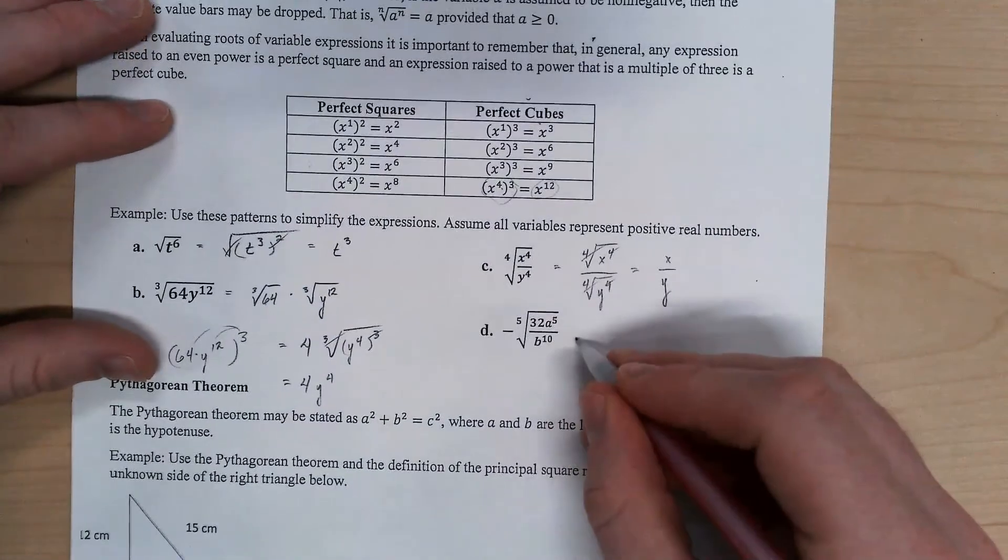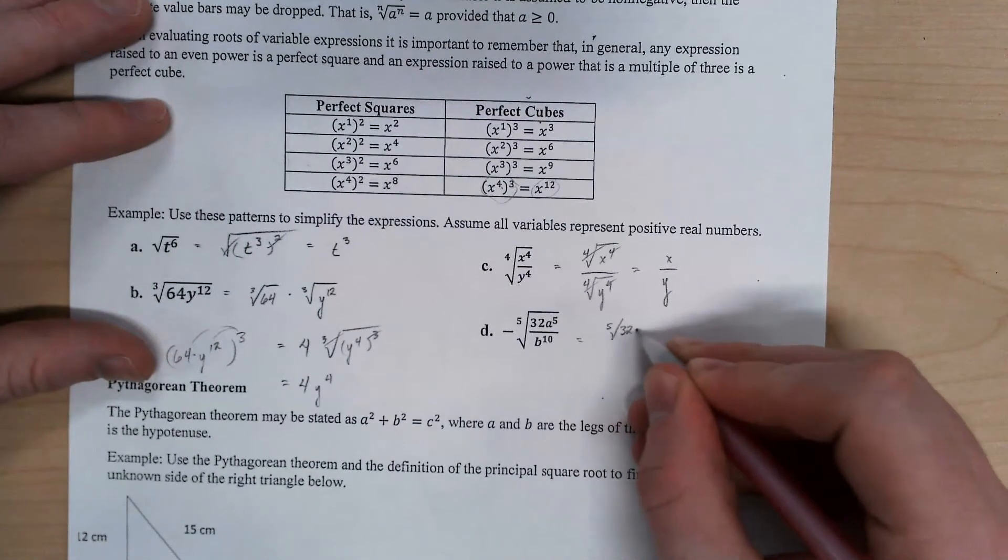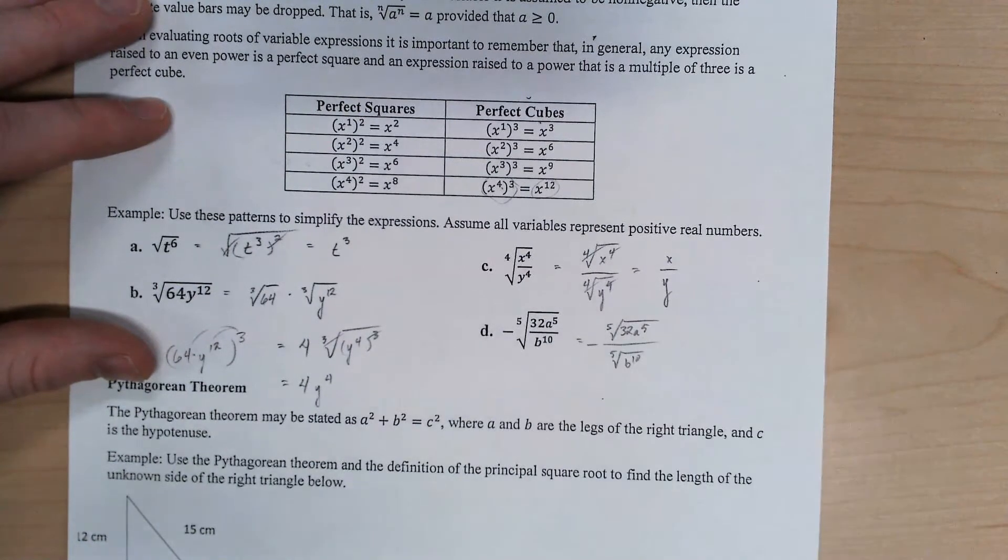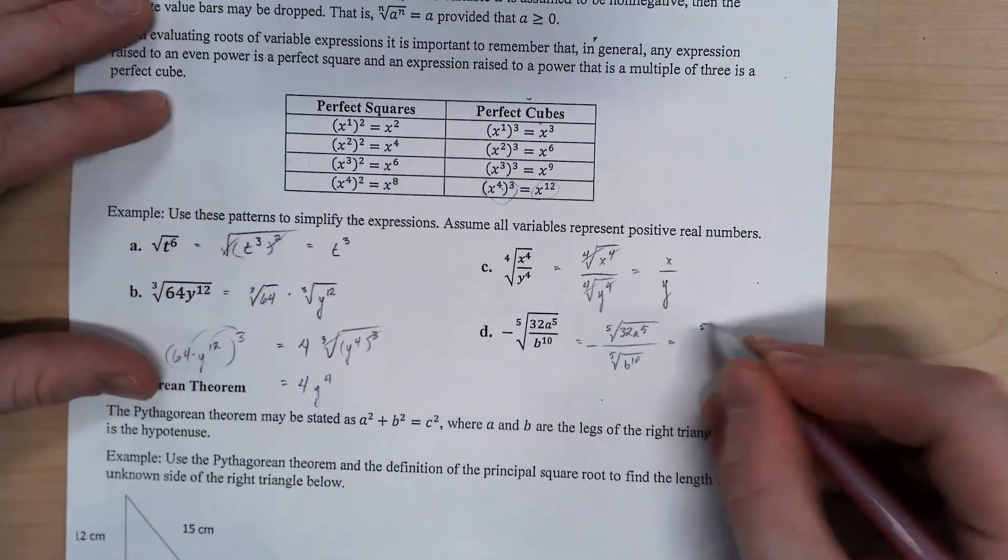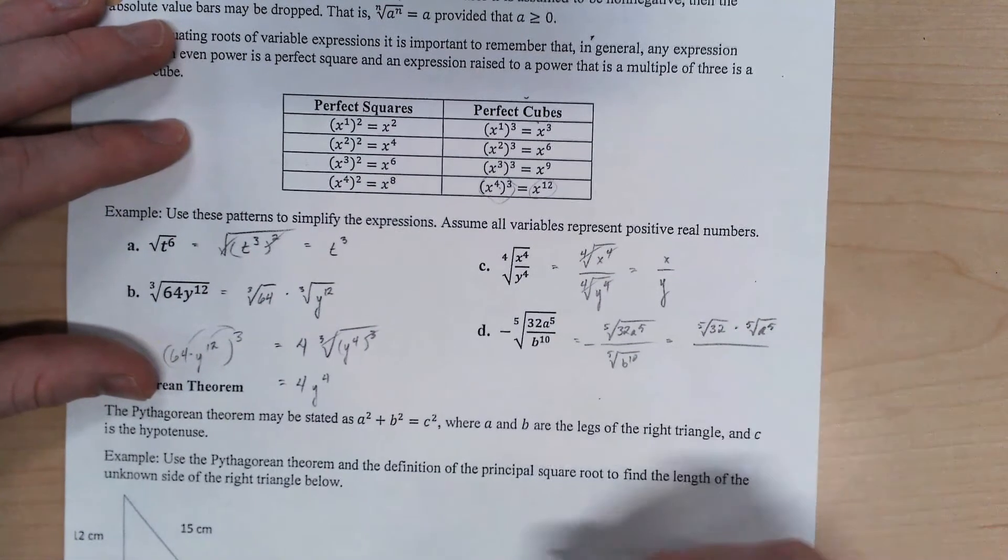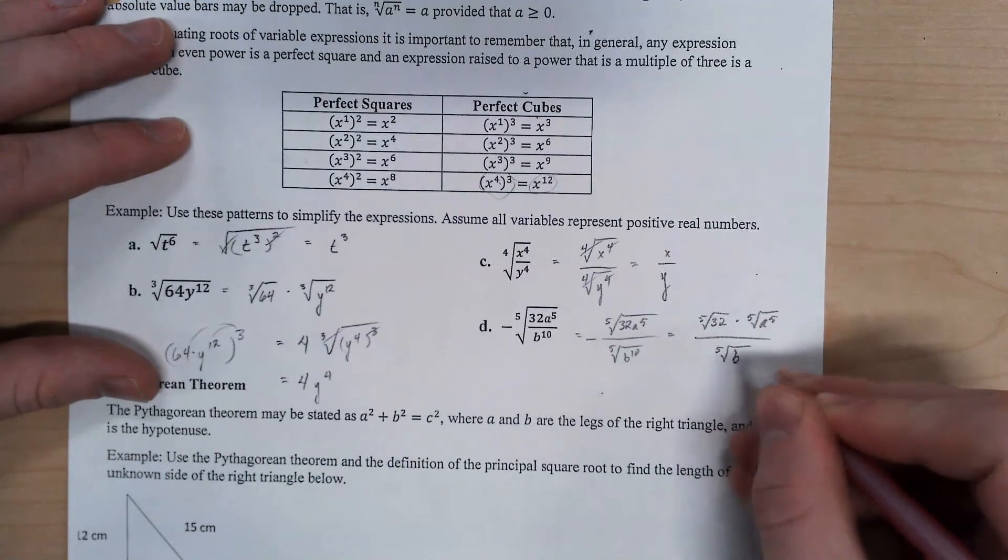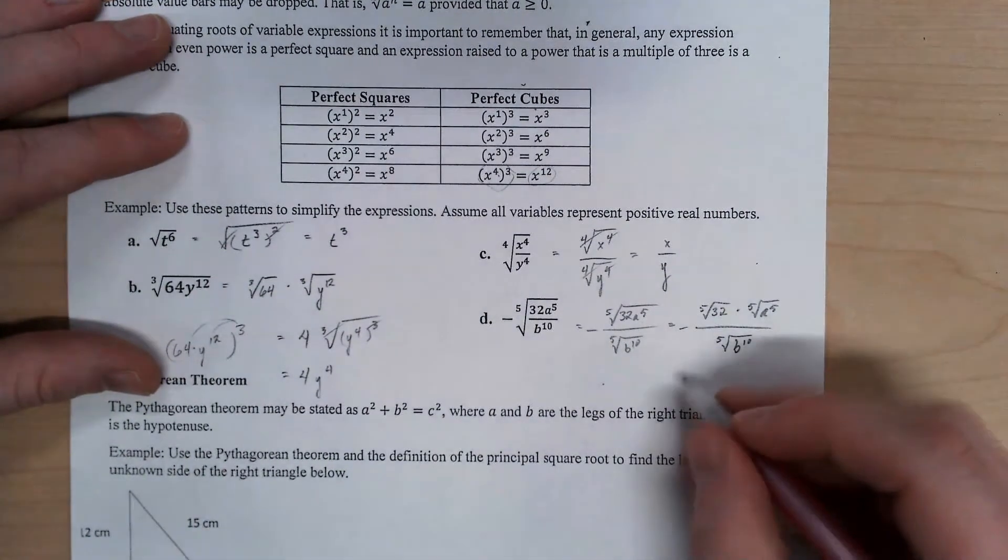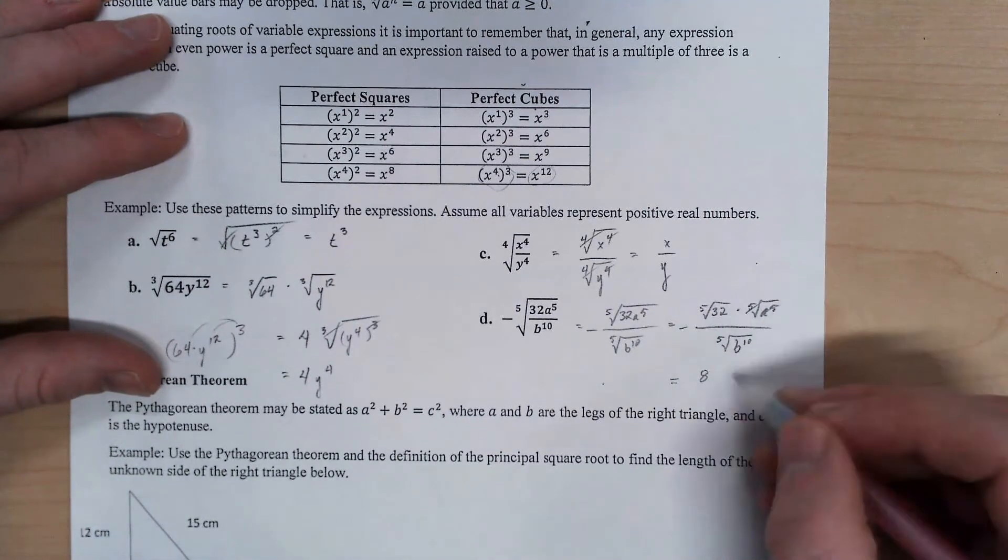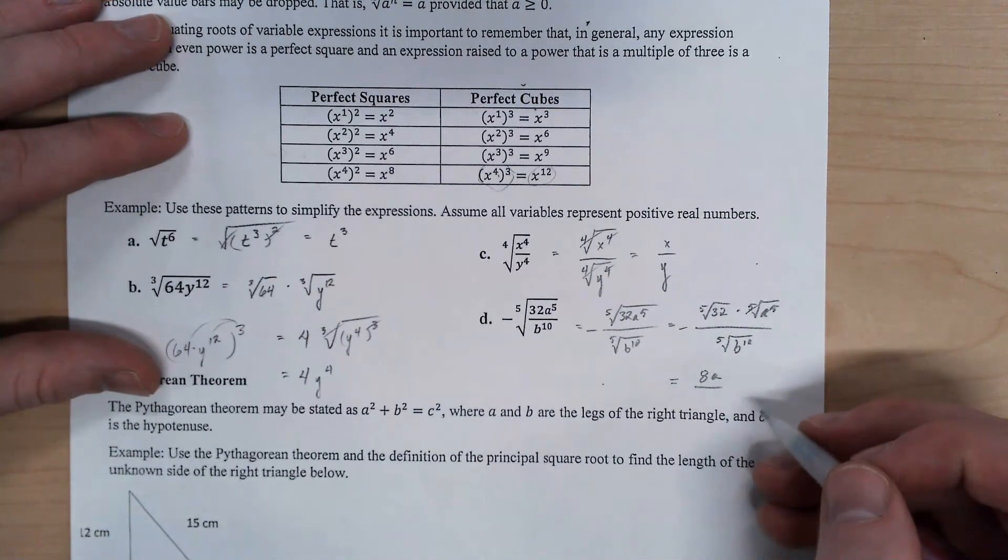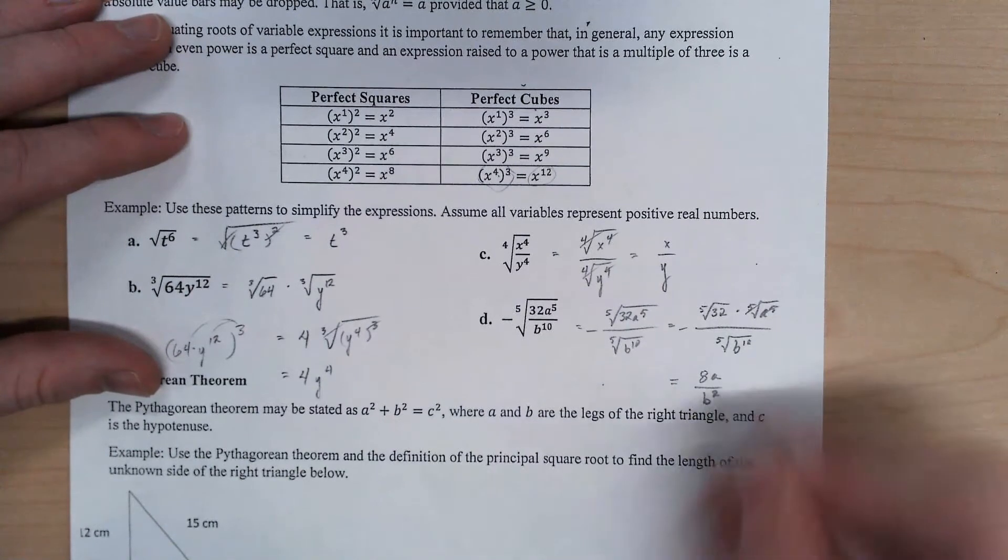Same thing happens here, where I can distribute that 5th root to the top, 5th root to the bottom. Get that negative back up front. I can distribute the 5th root to my factors up here. I'm going to leave that as it is for now. And now I can think about simplifying. The 5th root of 32 is 8. Those are canceling. We've got 8a. b to the 10th, if I stick with that pattern, 10 divided by 5 is 2.